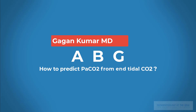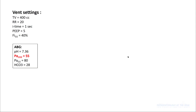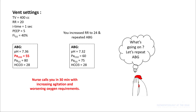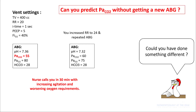Hello everyone. Today we will be talking about how to predict PaCO2 with end-tidal CO2. You place a patient on the ventilator, get an ABG, and your pH is 7.36 and PaCO2 is 55. You make some adjustments, increase the respiratory rate to 24, repeat an ABG, and PaCO2 looks almost similar. But 30 minutes later, the nurse calls reporting the patient is more agitated and hypoxemic. Could you have predicted your PaCO2 without getting a new ABG? This is what we will be talking about in this lecture.